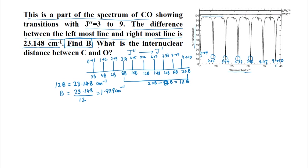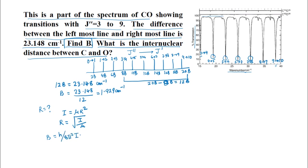The next question is: what is the internuclear distance between C and O? So we have to find R. We know that the moment of inertia I is given by μR², or R is given by the square root of I divided by μ. We also know B equals h divided by 8π²Ic. From here, we can write I equals h divided by 8π²Bc. So we have to find I and μ, then we can find the internuclear distance between C and O.